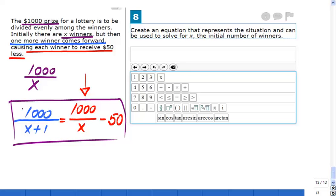You can write it in either way. You can switch around, you can say $1,000 divided by X minus $50 should equal $1,000 divided by X plus one. That's one way.